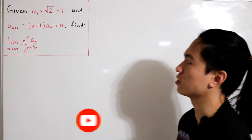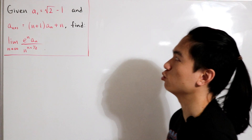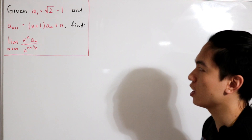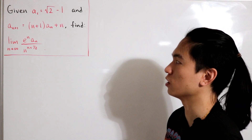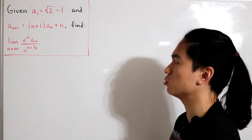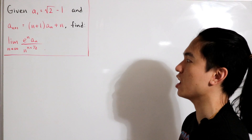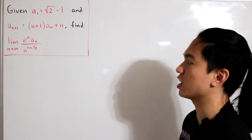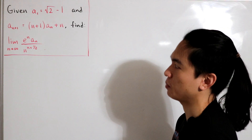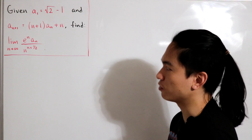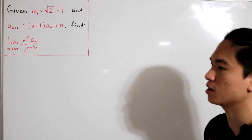We are given that a sub 1 is equal to the square root of 2 subtract 1, and for the recursive formula a sub n+1 is equal to (n+1)·a sub n plus n. We want to find the limit as n approaches infinity of e to the power n times a sub n, divided by n to the power n plus one half.